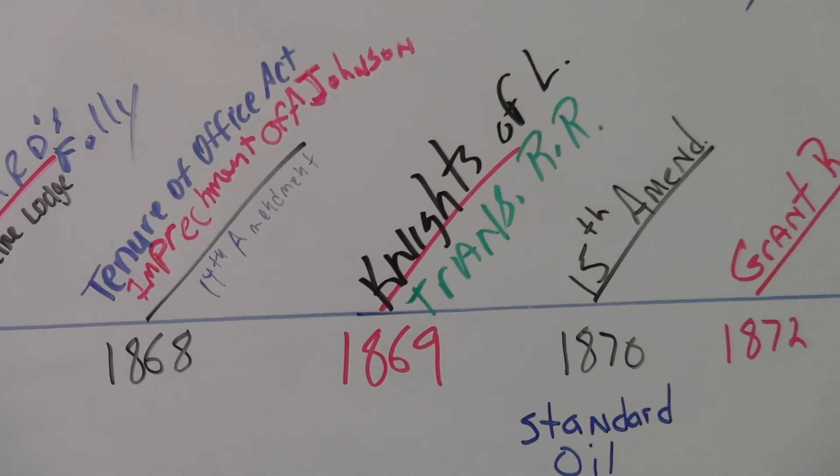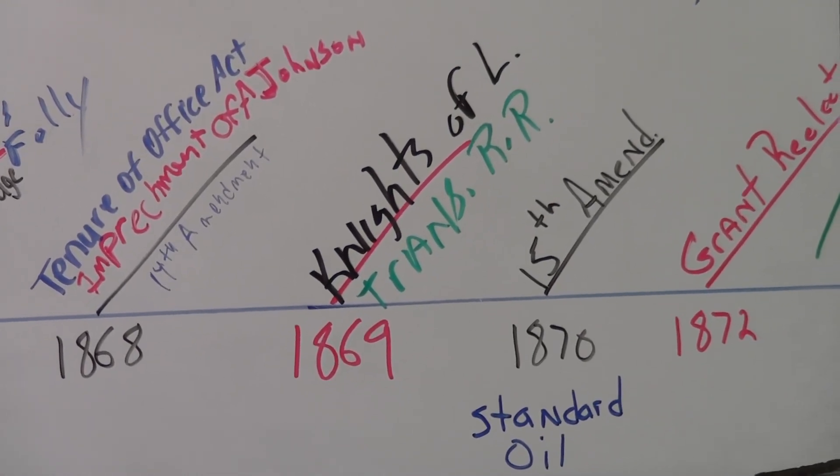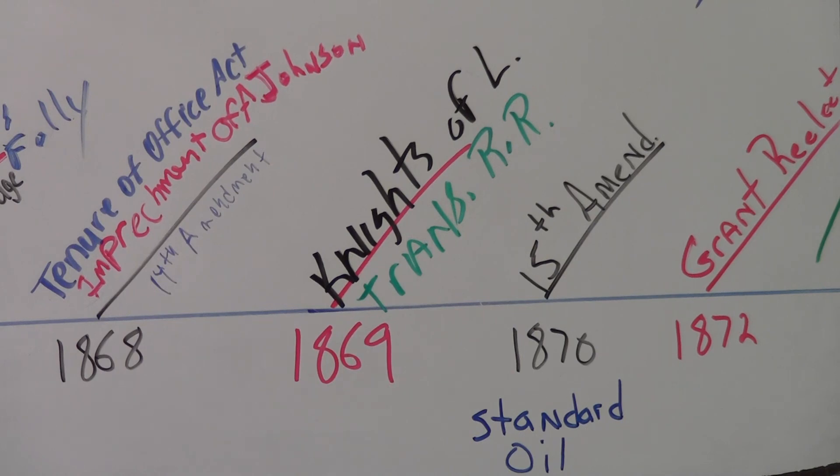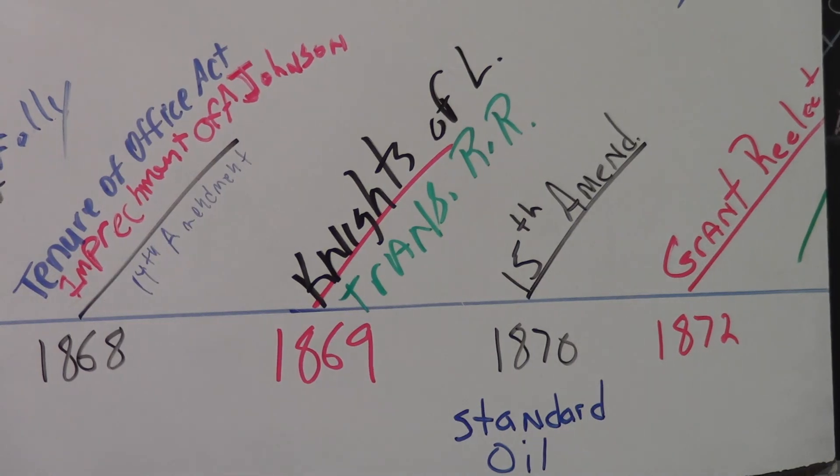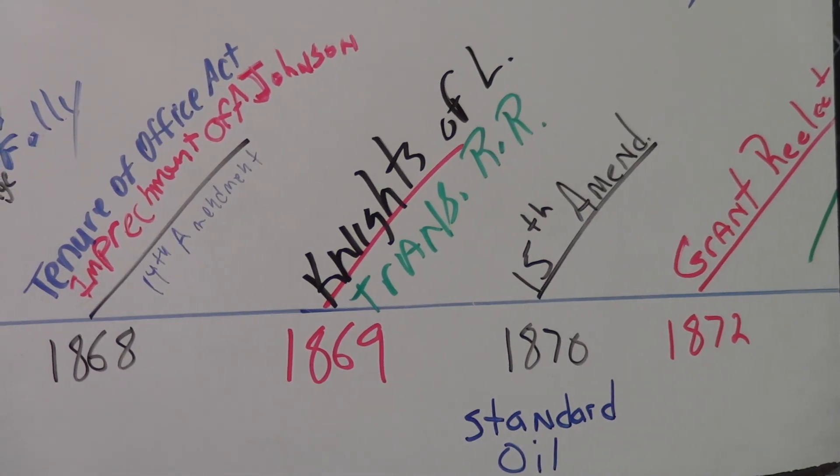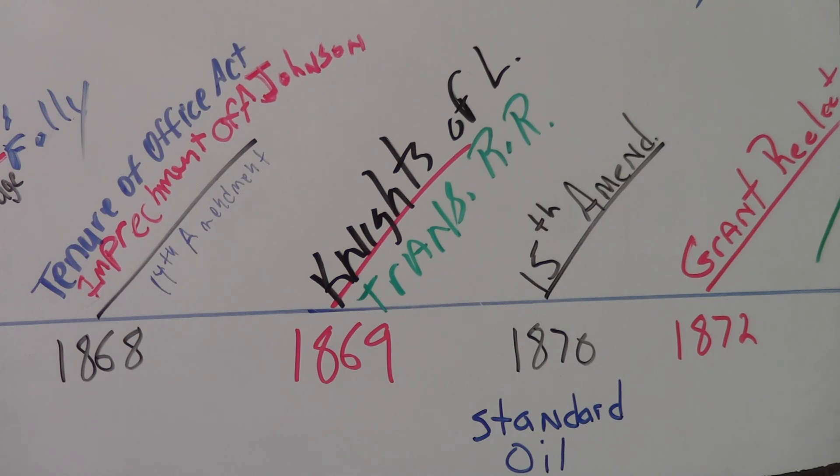Labor is growing, and when labor is growing, there are going to be disputes, and when there are disputes, there are going to be unions arising. Terrence Powderly will found the Knights of Labor in 1869. It will be a union of all different kinds of workers with all different skill levels, and the democratic base of it will be its ultimate undoing, although it will grow to be the largest labor union of the 1800s.